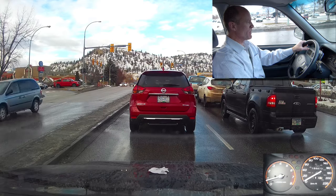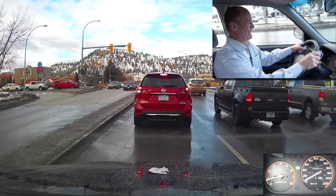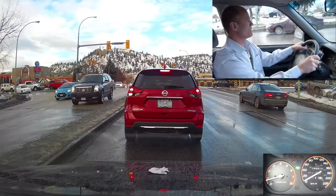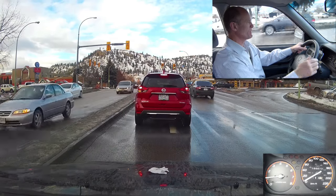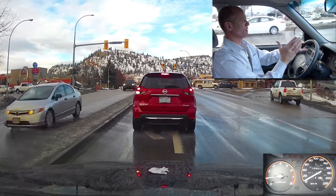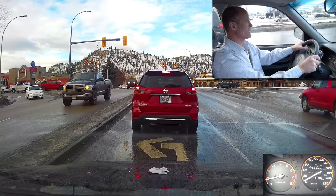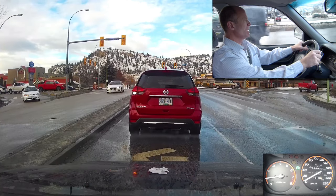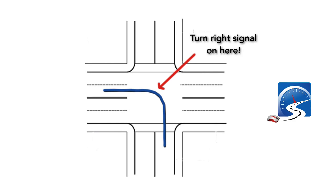Hi there smart drivers, welcome back. Rick with Smart Drive Test talking to you today about how to make a left-hand turn and then immediately make a right-hand turn, but having to merge across two or three lanes of traffic. We have the perfect intersection here — we're going to turn left, there's no advanced green, and then we have to merge across three lanes of traffic. We get up to the intersection, we're going to go on the gap, and at the apex of the turn we're going to switch our right signal on.